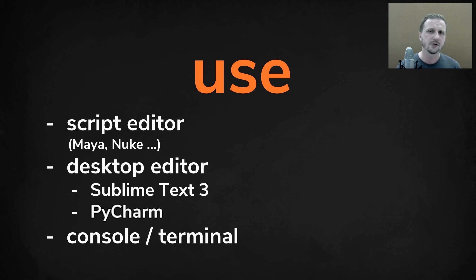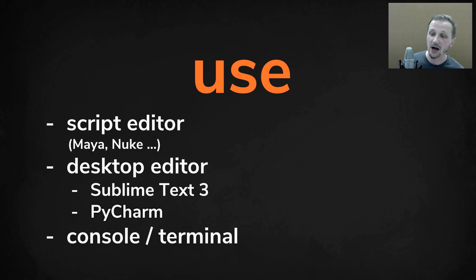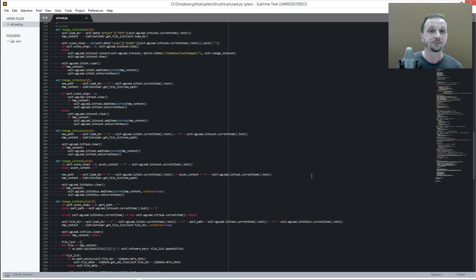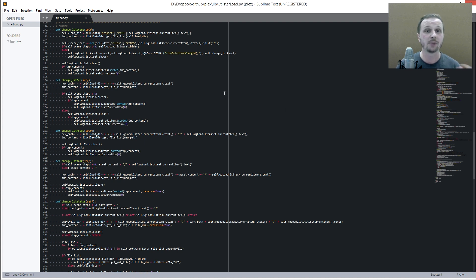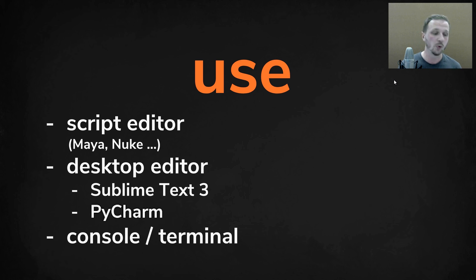Another way, especially since the script editor can sometimes be a little clunky and doesn't give you all the help you need, is to use a desktop editor. I can recommend two: one is Sublime Text, which is free and what I personally use. It's similar to Notepad++ but you can use plugins to customize it for Python specifically and get a great view and execution for code not related to a specific software. The other would be PyCharm, which a lot of Python-focused people use, and it's a great editor if you're just starting out.